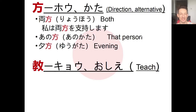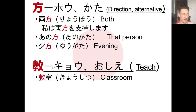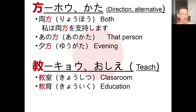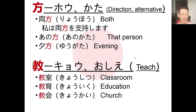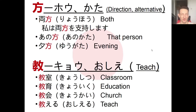Finally, the character 教 meaning 'teach.' Kyoshitsu (classroom) is teach plus room. Kyoiku (education) is teach plus raise. Kyokai (church) is teach plus meeting - a place to meet and learn about religion. The verb oshieru (to teach) is very commonly used and can also mean 'to tell' - for example, onamae wo oshiete kudasai ('please tell me your name') or denwa bango wo oshiete kudasai ('please tell me your phone number').